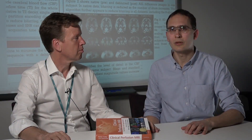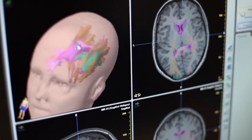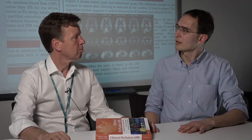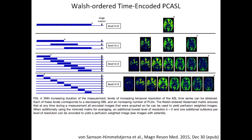In this project we're going to use the latest ASL sequences available. We just had five years of European collaboration that created a network between all the European universities to basically join resources in developing the best sequences available. We're going to take the sequence that can map cerebral perfusion as well as map the arterial arrival time — two parameters in one scan.